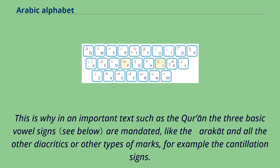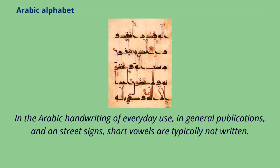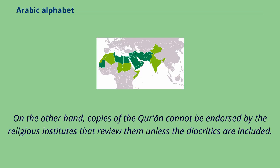This is why in an important text such as the Quran, the three basic vowel signs — the harakat and all other diacritics — are mandated. In the Arabic handwriting of everyday use, in general publications, and on street signs, short vowels are typically not written. On the other hand, copies of the Quran cannot be endorsed by religious institutes unless the diacritics are included.